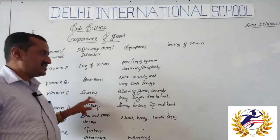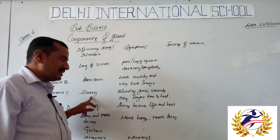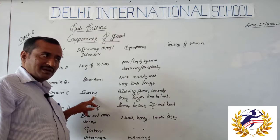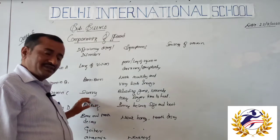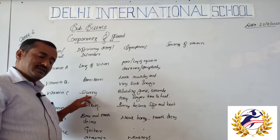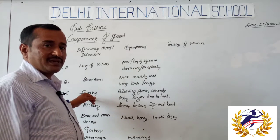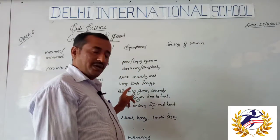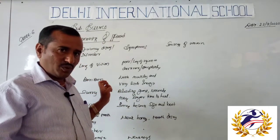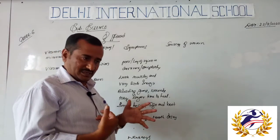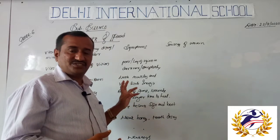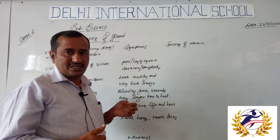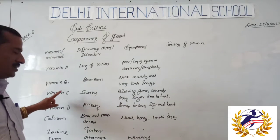Next comes vitamin C deficiency — scurvy. A person who is not eating vitamin C containing food, such as lemon, will develop this disorder called scurvy. It leads to bleeding gums — by biting hard food items, some blood will come out. Along with that, if the person gets any injury or wound, blood will start to come out continuously and the wound will not heal quickly. That is because of lack of vitamin C.